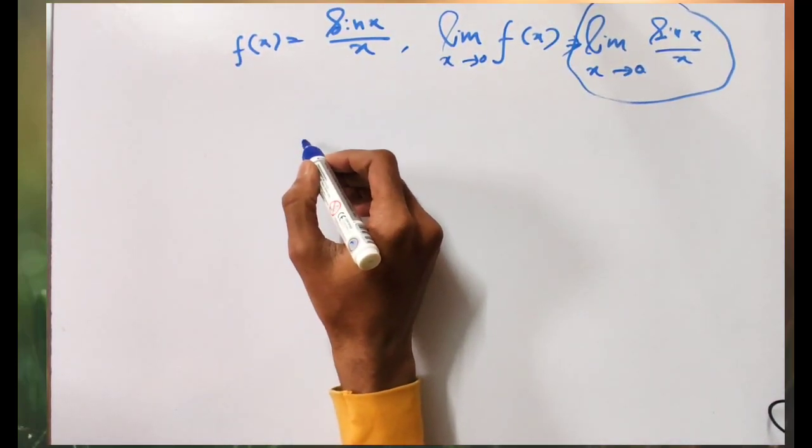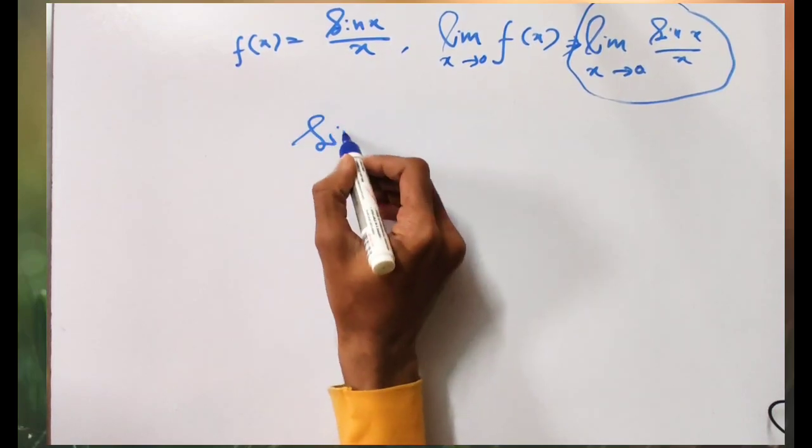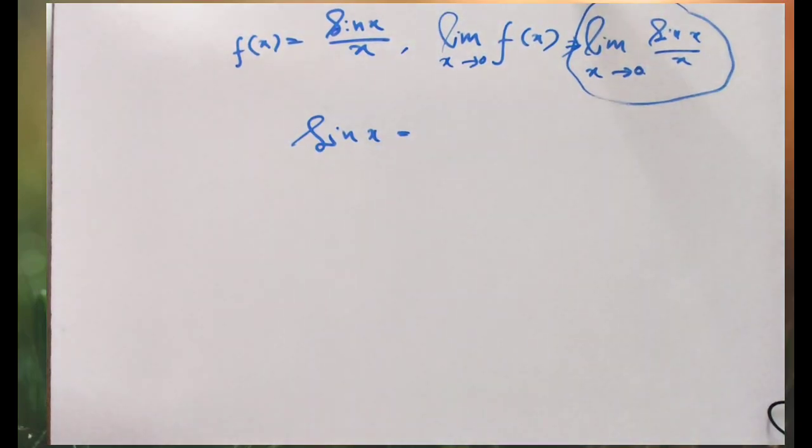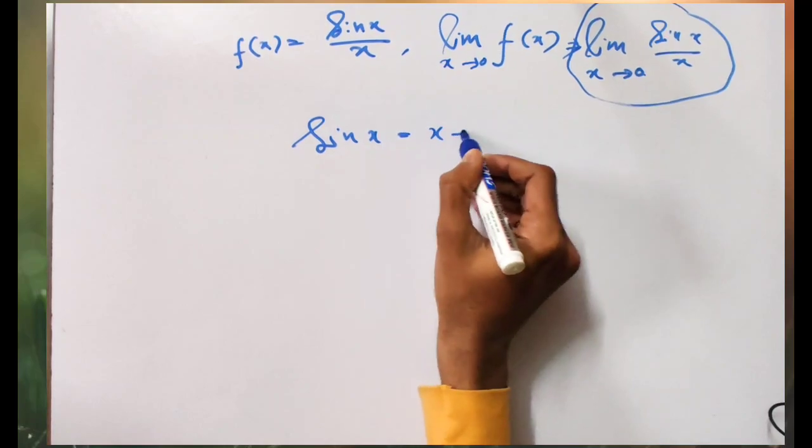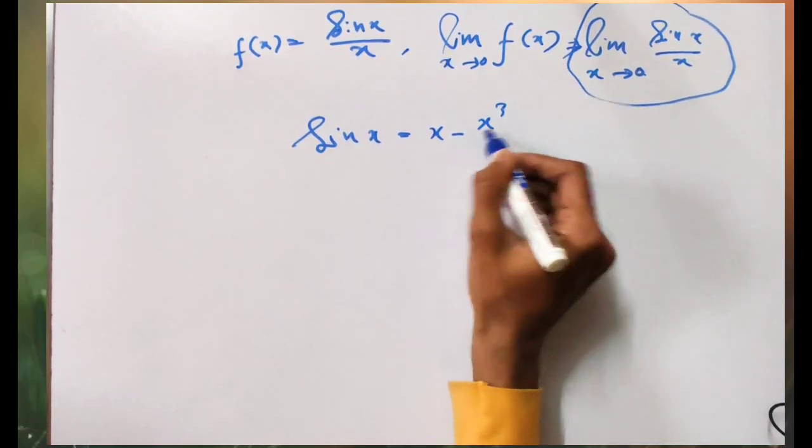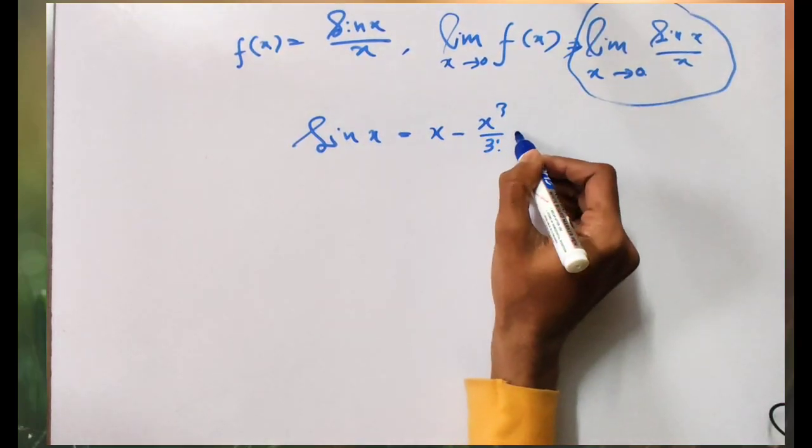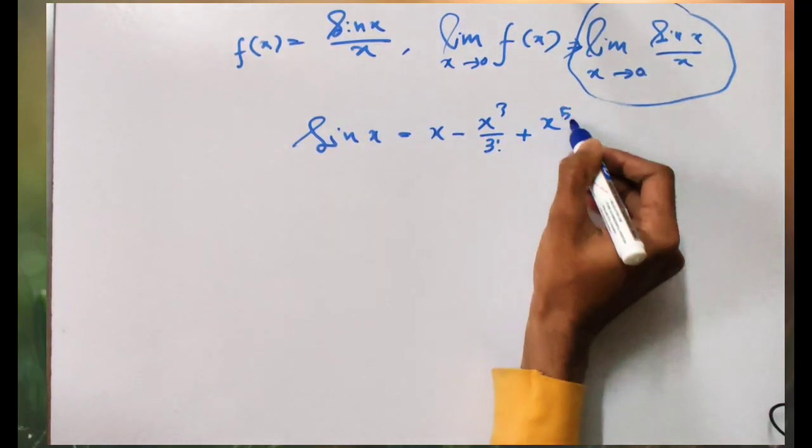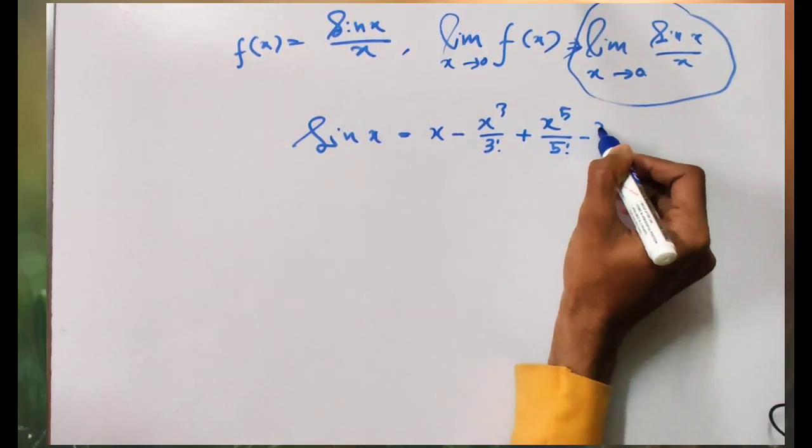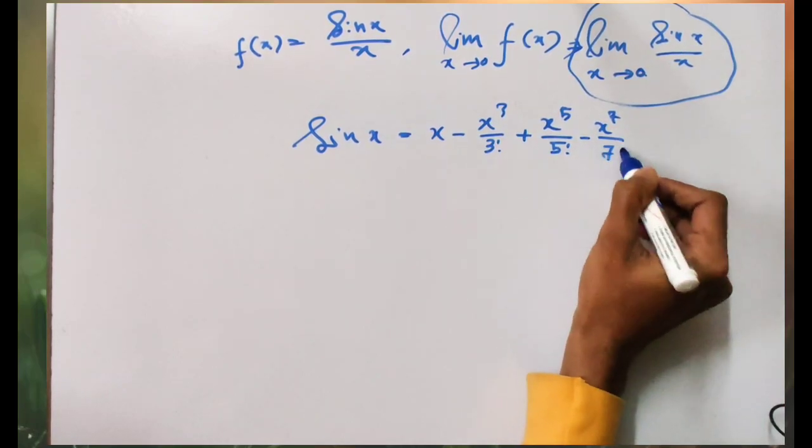First, let me expand sin(x) about the point x = 0. In general, sin(x) = x - x³/3! + x⁵/5! - x⁷/7! and so on.